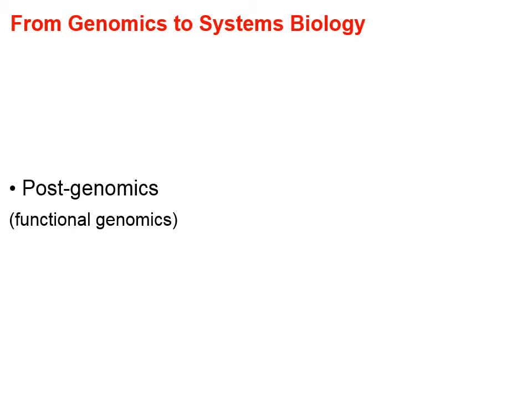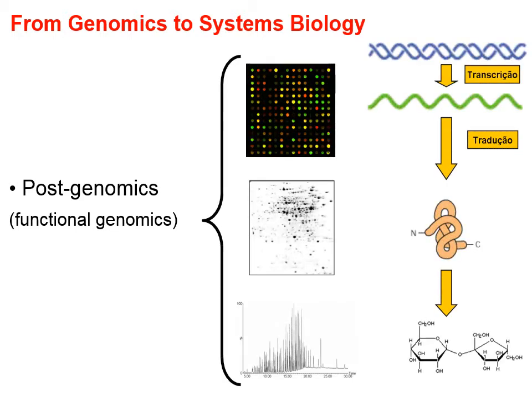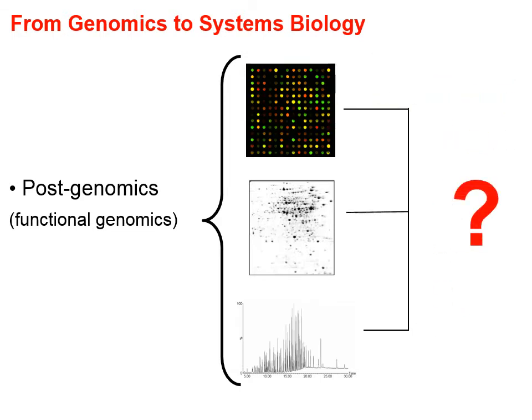The genomics era was the beginning of the systems biology era. After that, the next question was to understand the function of the genome. We have the DNA and the RNA, but what is the function of the genes? This started the era of post-genomics, also called functional genomics. The aim was to understand the function of the genes that compose every organism. For this, scientists created several platforms for large-scale analysis: transcriptomics, proteomics, metabolomics, ionomics, fluxomics, lipidomics, and so on.